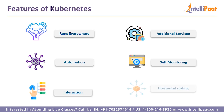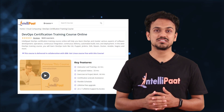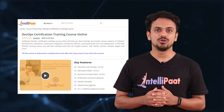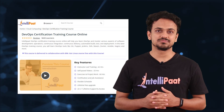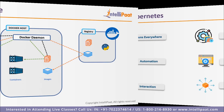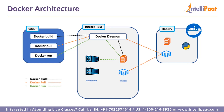Kubernetes also provides horizontal scaling. It allows you to scale resources not only vertically but also horizontally, easily and quickly. Now, as we've discussed the features of both Kubernetes and Docker, let us move forward and discuss some of the key parameters comparing Docker and Kubernetes.